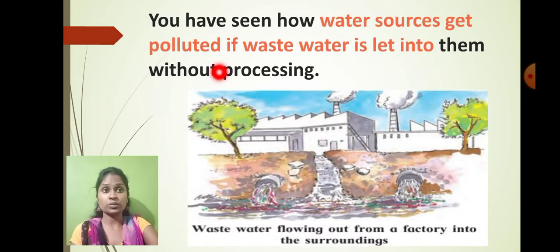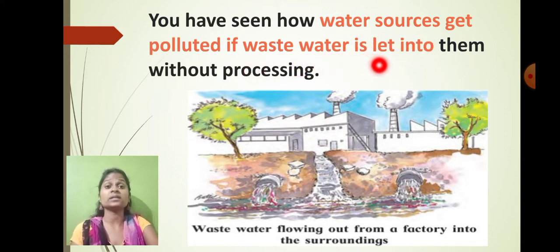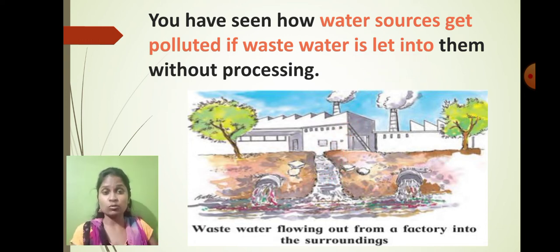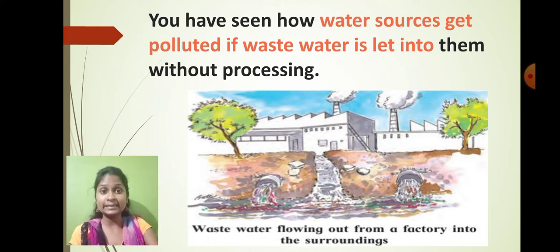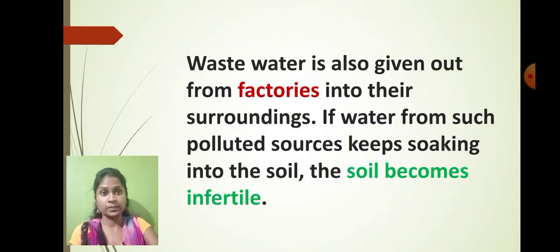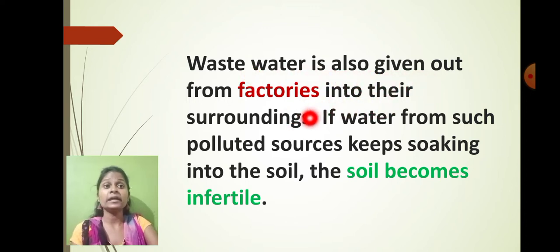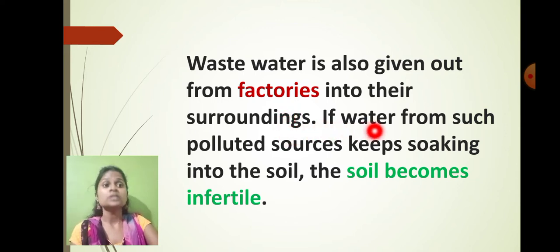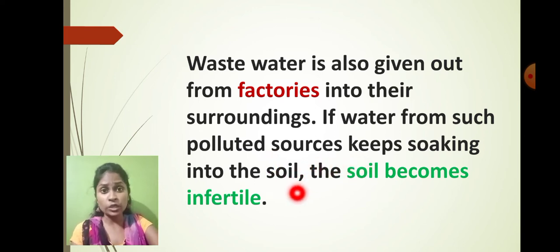Water sources get polluted if wastewater is allowed to go inside water bodies. If any type of wastewater gets mixed into drinking water, our drinking water gets contaminated — this is water pollution. Wastewater is mostly given out from factories into their surroundings. If water from polluted sources keeps soaking into the soil, the soil becomes infertile.